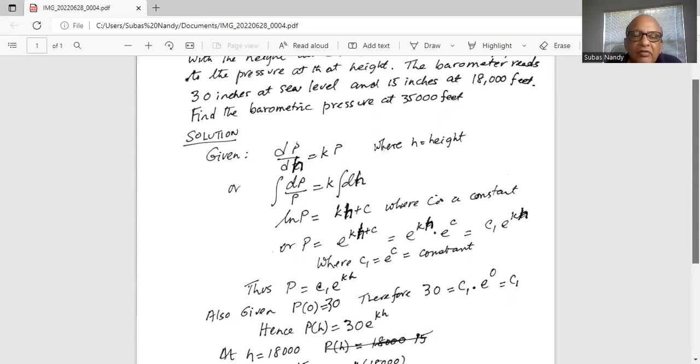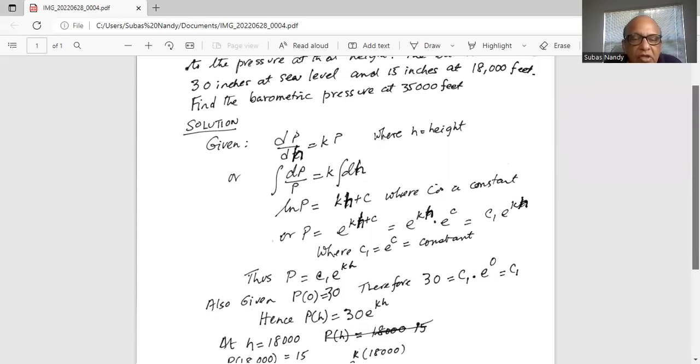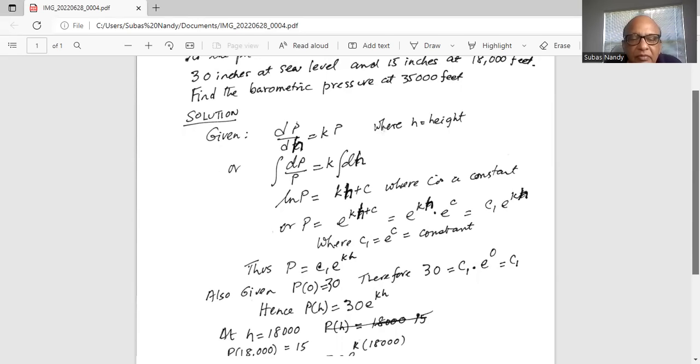It's given to us that at sea level, that is when h is equal to 0, p of 0 is equal to 30. Therefore 30 is equal to c1 multiplied by e to the power of 0. The natural number raised to the power of 0 is 1, which means c1 is equal to 30. So we plug it back in the equation. For c1 we write 30, and then e to the kh.